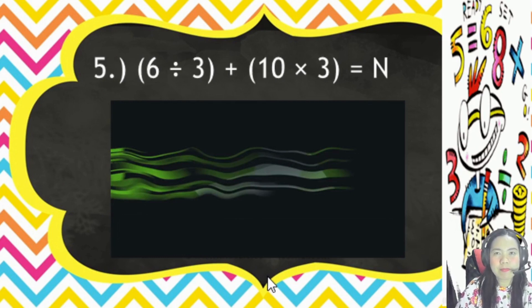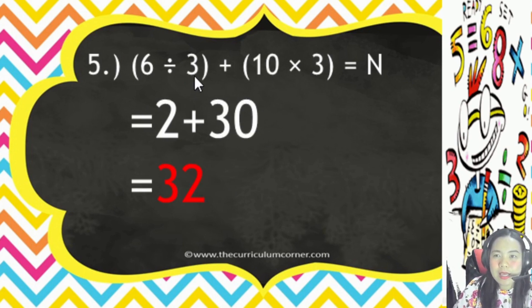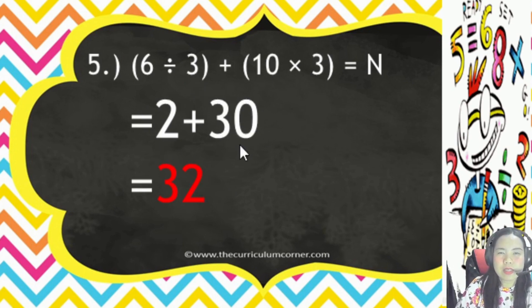Number 5: solve inside the parentheses first. 6 divided by 3 equals 2, then 10 times 3 equals 30. Then add: 2 plus 30 equals 32.